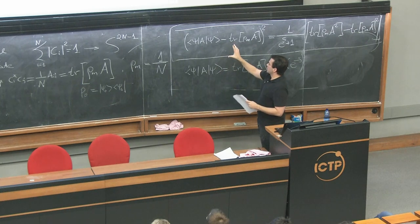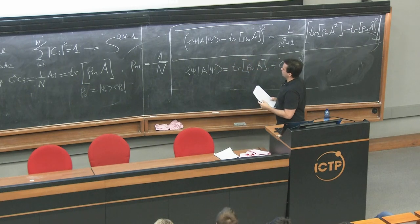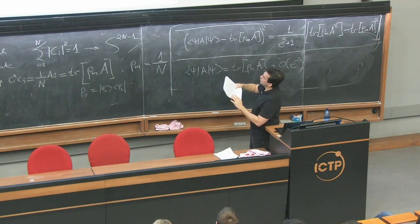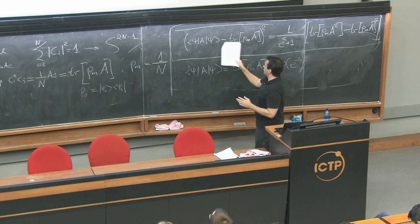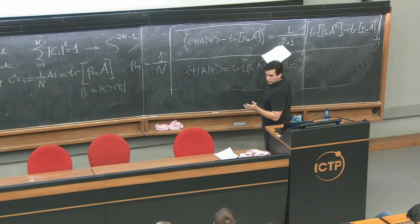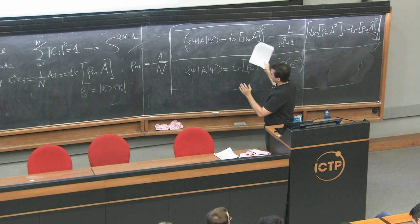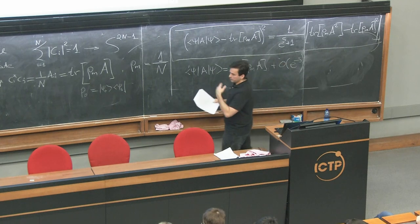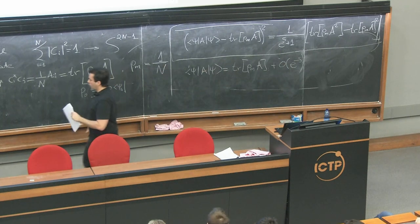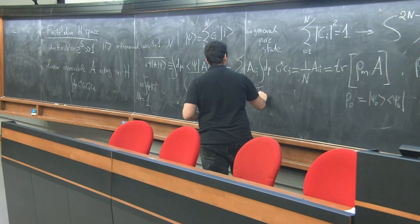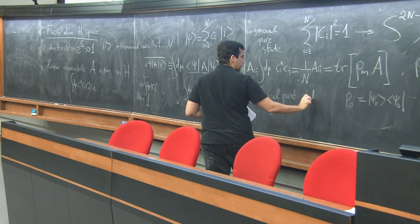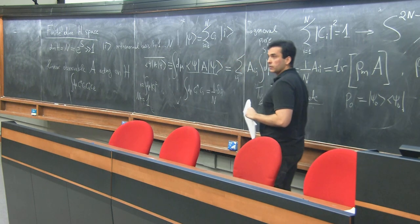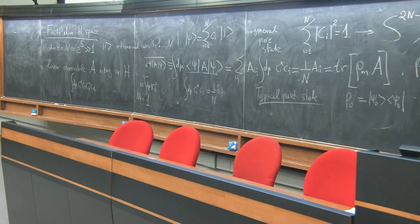For those familiar with the eigenstate thermalization hypothesis (ETH): this theorem does not require it — it's more basic. Also note we're comparing typical pure states to the microcanonical density matrix. If instead you compare to the canonical density matrix, the deviations are suppressed by inverse powers of the entropy 1/S rather than exponential factors.